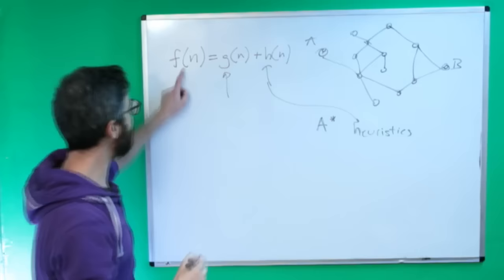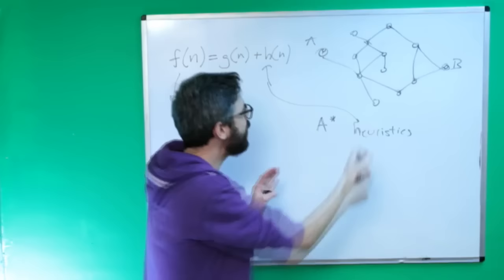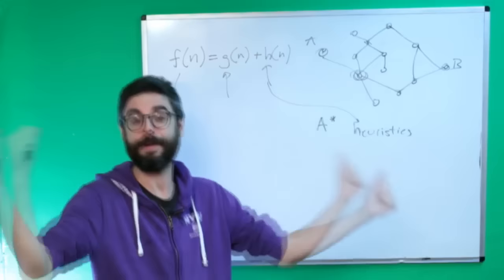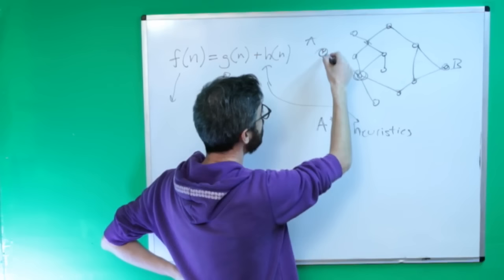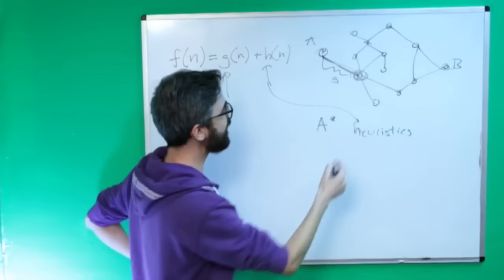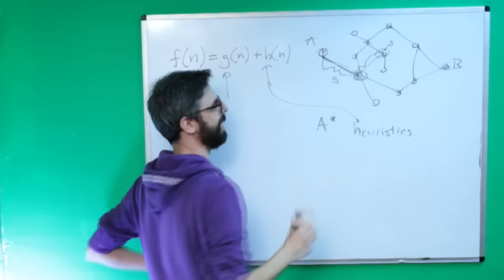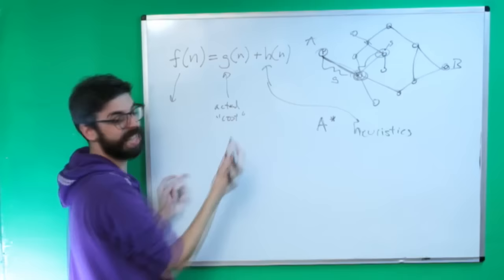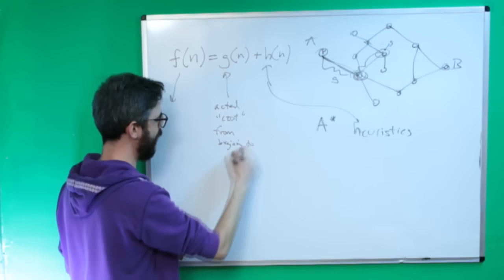F(N) is the cost function. The G is the known amount — the actual distance traveled so far. For example, if this node's distance is G, then if I go to the next node, the G for that node is this distance plus that distance. So G is the actual cost, the distance from the beginning to the current node.